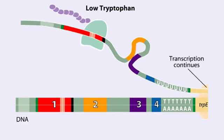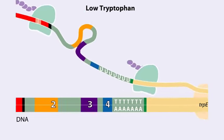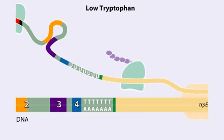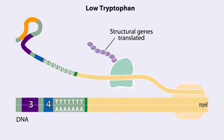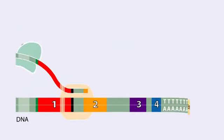Transcription continues. RNA polymerase transcribes the structural genes, which are translated into enzymes, which in turn synthesize more tryptophan. You can mimic the effect of tryptophan levels by determining how long the ribosome pauses at the tryptophan codons.